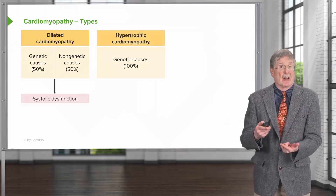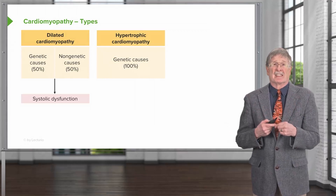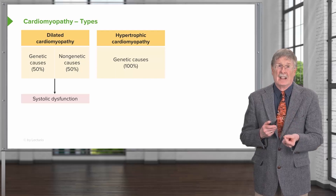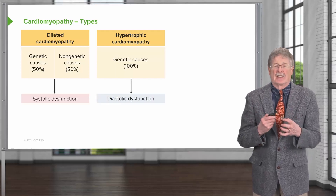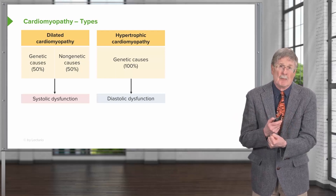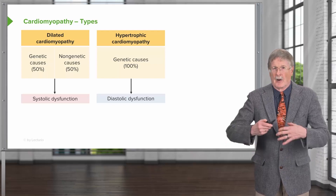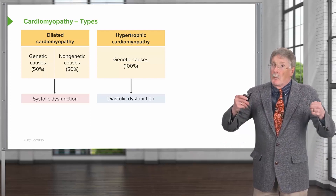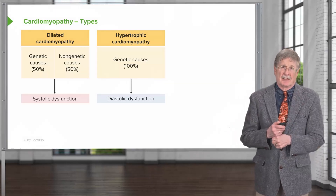In hypertrophic cardiomyopathy, nearly 100% of cases have a genetic cause and we understand the vast majority of those. It's not systolic dysfunction — they actually squeeze too well — but they don't relax very well. Like hard-driving medical students, they work really hard and don't relax well. So it's diastolic dysfunction.